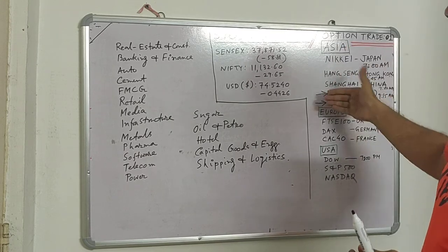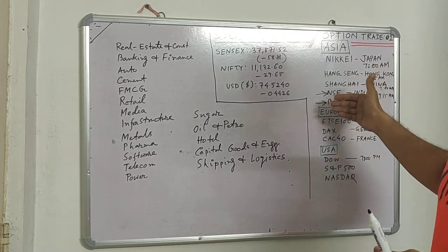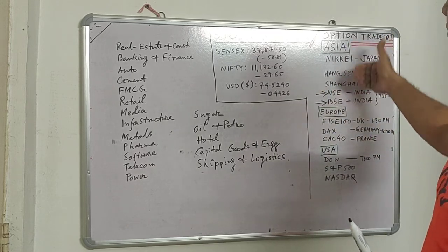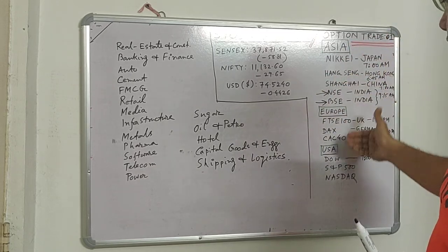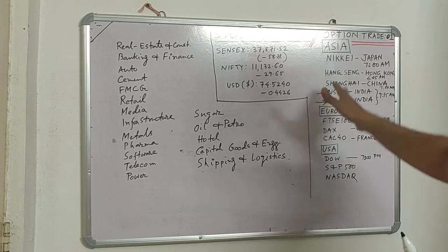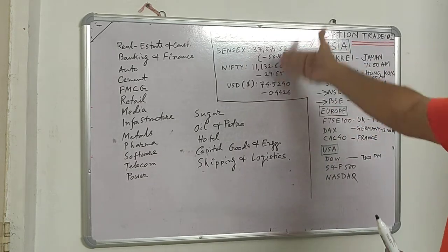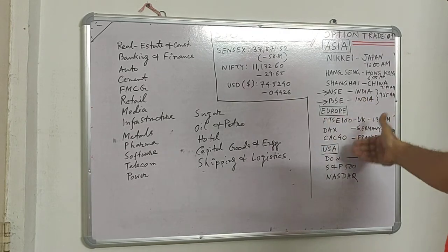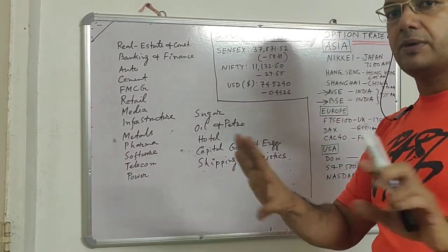In Indian markets, people closely monitor how Asia is performing in the morning. Then at around 12:30 there is a change in pricing depending upon the European market. This is the stock market — big exchanges with big and small companies all listed.